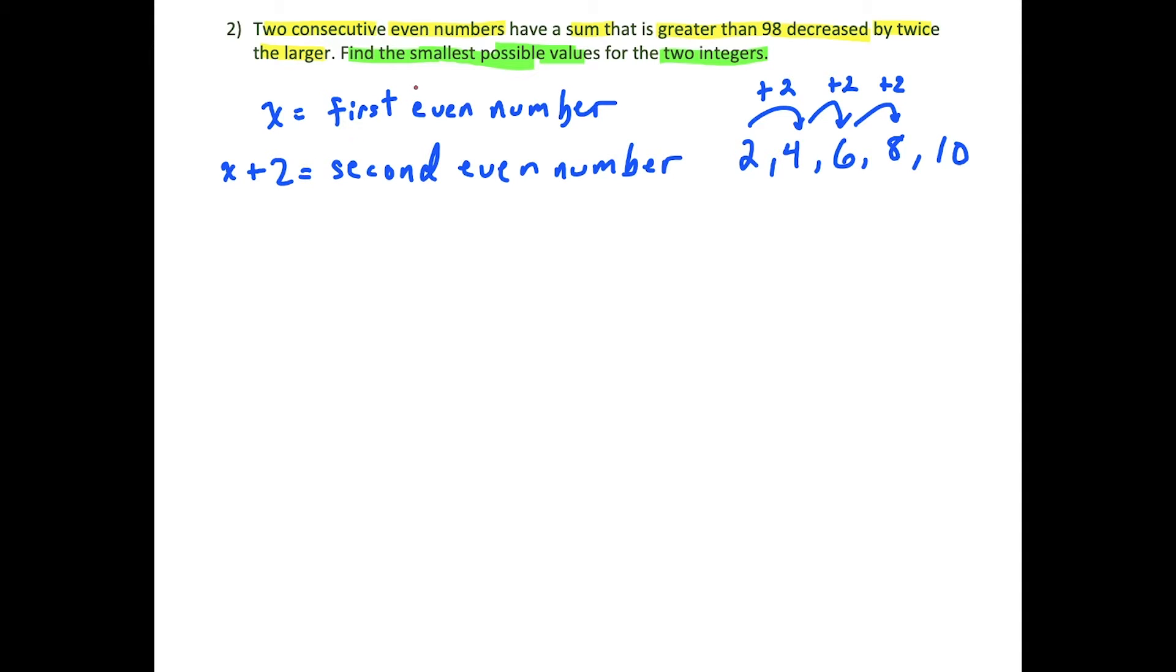Now let's apply this to the details in the question. They're telling us that the sum of these two consecutive even numbers, so we're going to add them together, x plus the second number is x plus 2. And we're saying here that it is greater than, so we're going to throw in our greater than symbol. Now we have 98 decreased by, this phrase here tells us to subtract. So we're going to have 98 decreased by twice, twice means times two. So minus two times the larger. The second even number, this is the larger of the two, because it's plus two, it's a greater number. So that's what's going in parentheses here is the x plus 2.